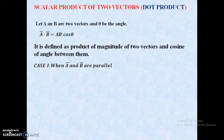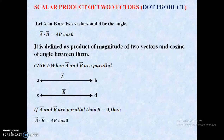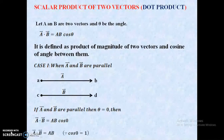Now we explain Case 1: if vectors A and B are parallel, these vectors are parallel, then theta is equal to 0. Therefore, A-vector dot B-vector equals A·B·cos(0), which equals A·B, that is, the product of their magnitudes.